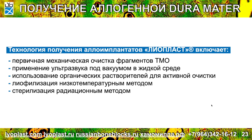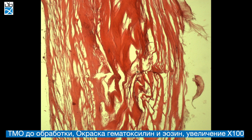Получение аллогенной твердой мозговой оболочки происходит следующим образом: первичная механическая очистка от фрагментов, применение ультразвука под вакуумом при частоте 38–42 Гц. Для удаления следов жира, белка и нуклеиновых кислот используются органические растворители для активной очистки. Затем лиофилизация низкотемпературным методом и стерилизация радиационным методом быстрыми электронами. В итоге такой очистки материал не содержит никаких следов жира, белка, нуклеиновых кислот. Белки там есть, но уже не клеточные, а межклеточные вещества, и там нет ДНК, что говорит о полной очистке от клеточных структур.